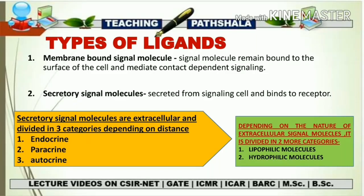This contact-dependent signaling property is seen in juxtacrine signaling, where there is also contact-dependent signaling. So an example of membrane-bound signal molecule signaling is juxtacrine signaling. The next type is the secretory signal ligand — the ligand which is secreted from the cell surface and travels to the place where the specific receptor is present. These ligands are present in the extracellular environment and are also termed extracellular signal molecules. They are very specific for the receptor present on the target cell.